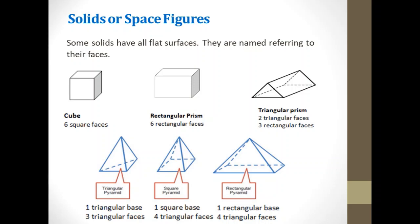Second one is a square pyramid. A square pyramid has one square base and four triangular faces.